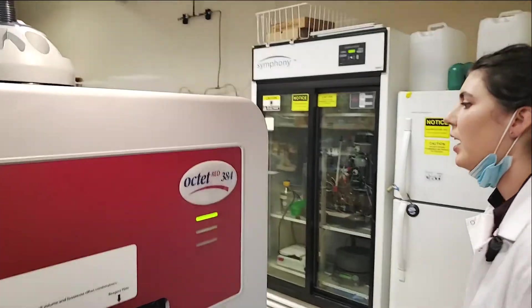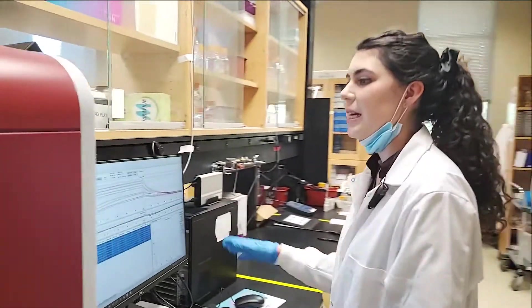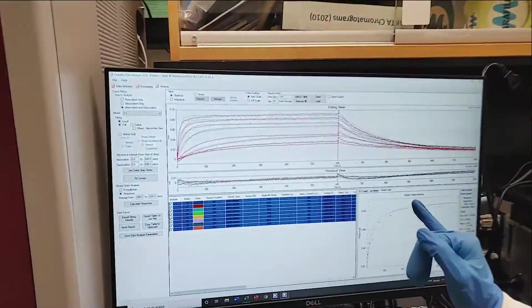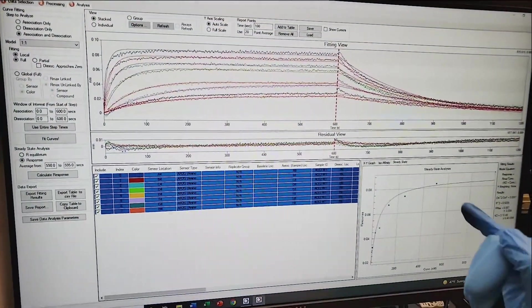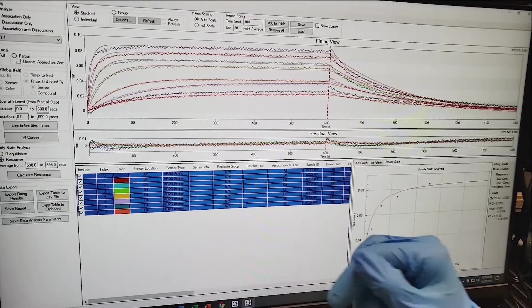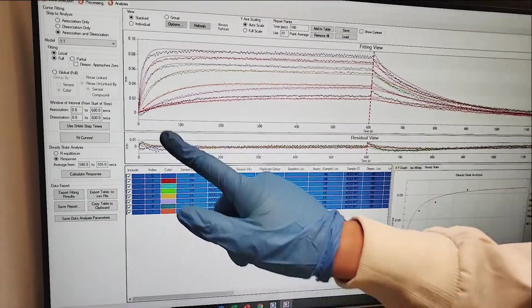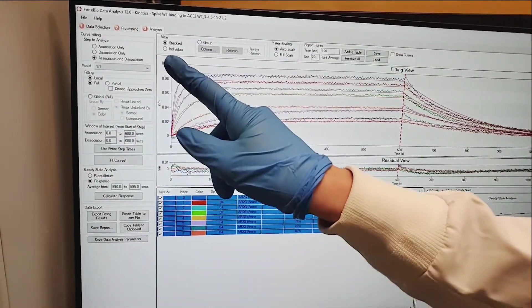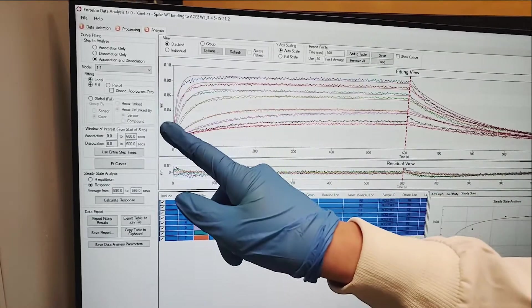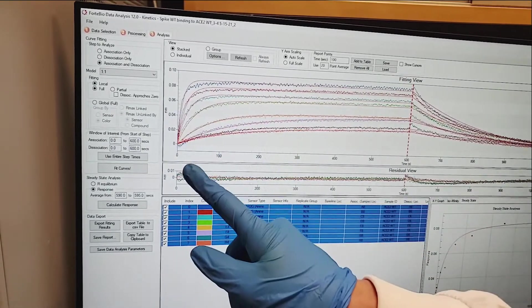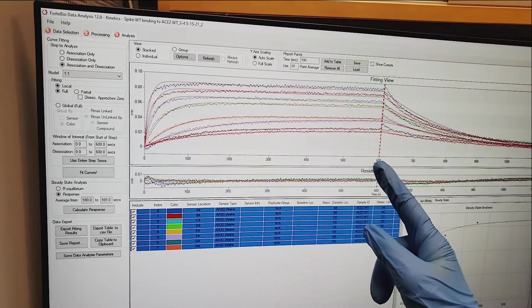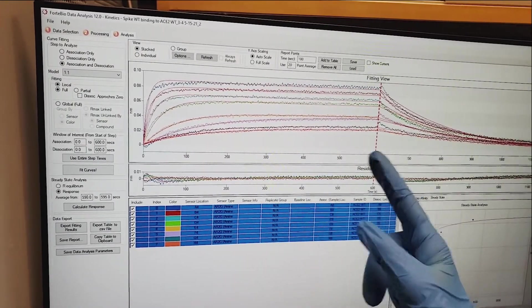Over here I will give an example of how this data can be processed. This is an example of spike from SARS-CoV-2 binding to ACE2 wild type. On the y-axis here you see how it measures the wavelength response in nanometers, and on the x-axis it shows how the change in wavelength is measured in time, in seconds.